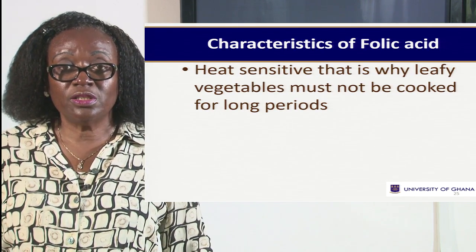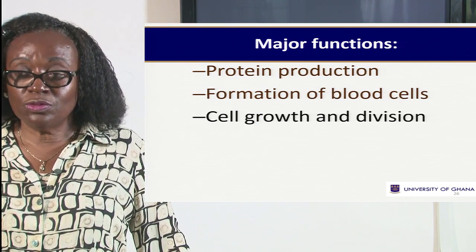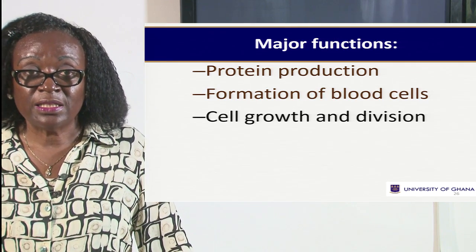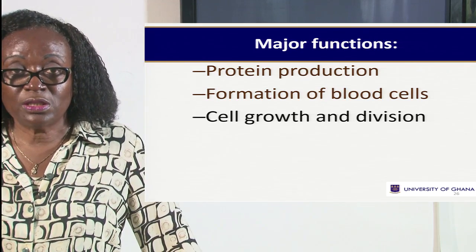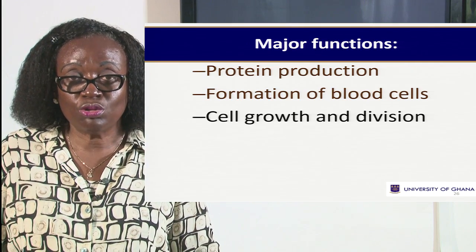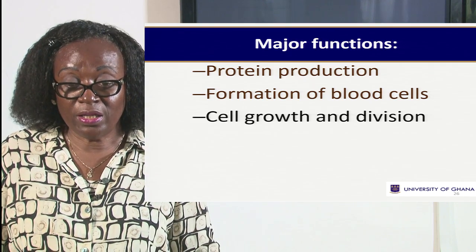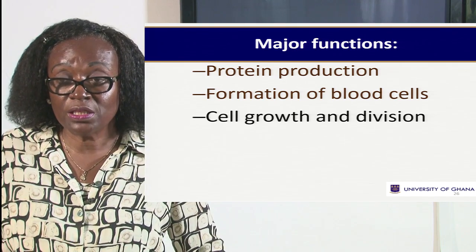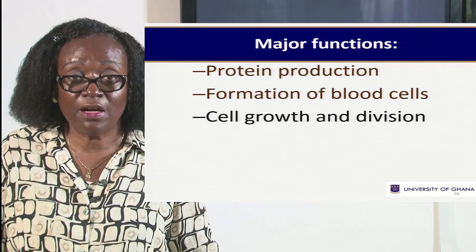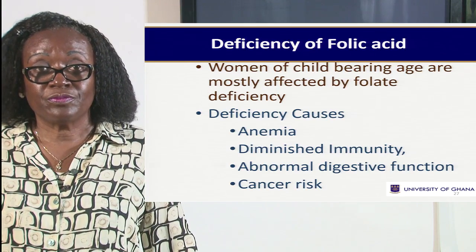Folic acid is also heat sensitive, so we need not overcook. What are the functions of folic acid? It plays an important role in protein production — that is, in cell division — because our bodies are made up of proteins. It is also very important in blood formation. That is why in Ghana, by law, all pregnant women are given folic acid when they visit the clinic. But if you are eating very well, diet is better than medicine.